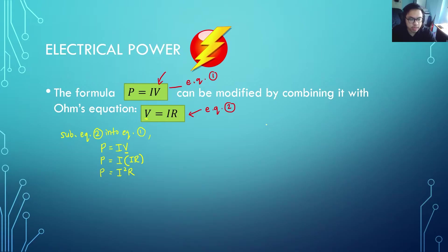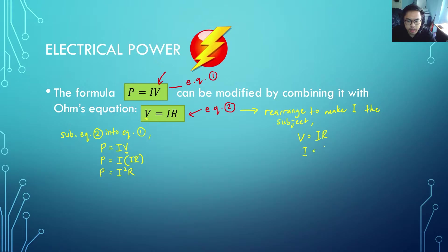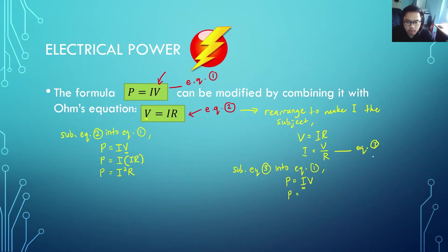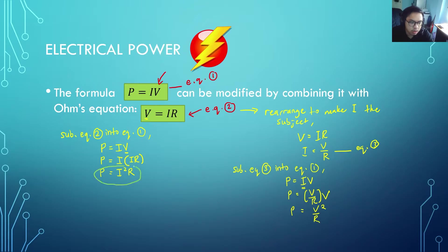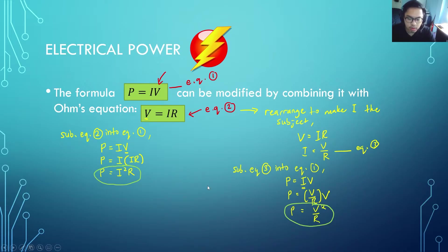We can derive another formula by rearranging equation 2. Rearranging V equals IR to make I the subject gives I equals V over R — call this equation 3. Substituting equation 3 into equation 1, the I becomes V over R, and expanding the bracket gives P equals V squared over R. So combining P equals IV with different forms of V equals IR yields two new formulas: P equals I²R and P equals V²/R.